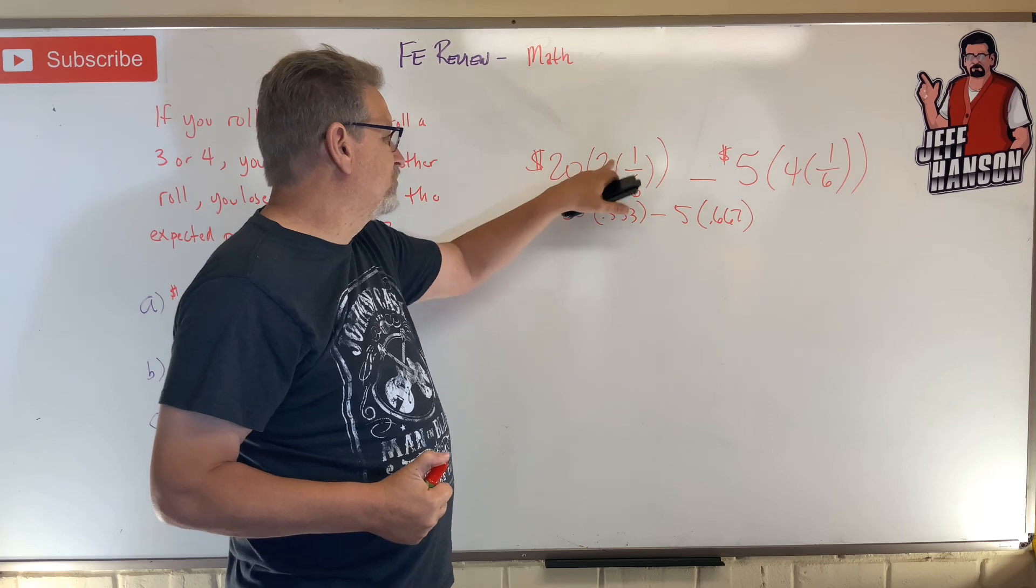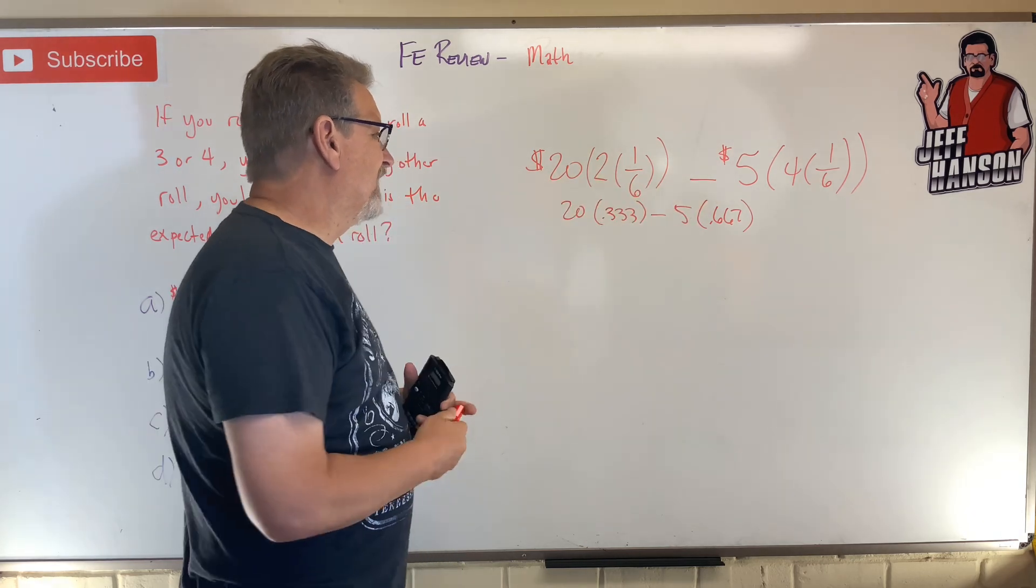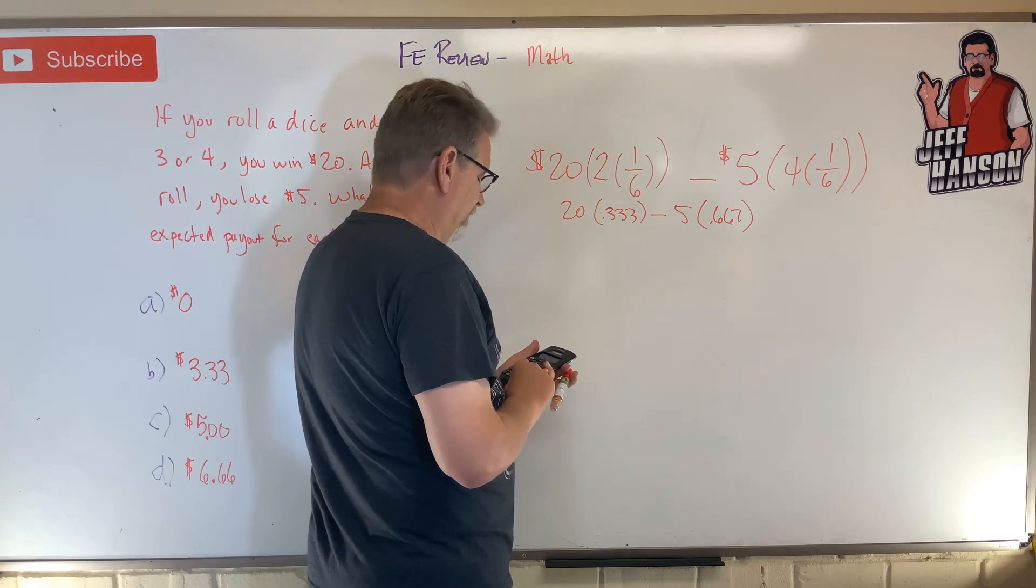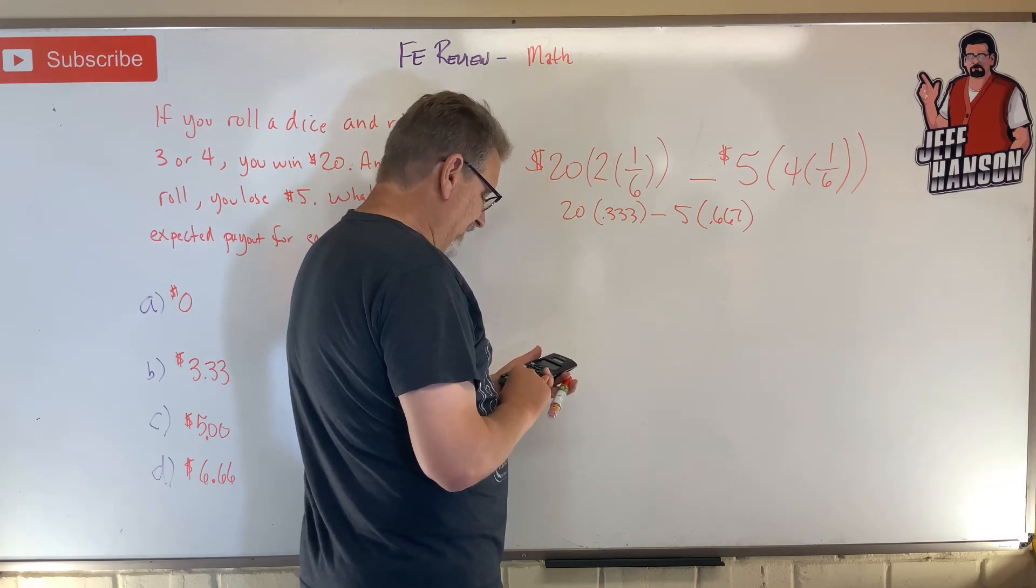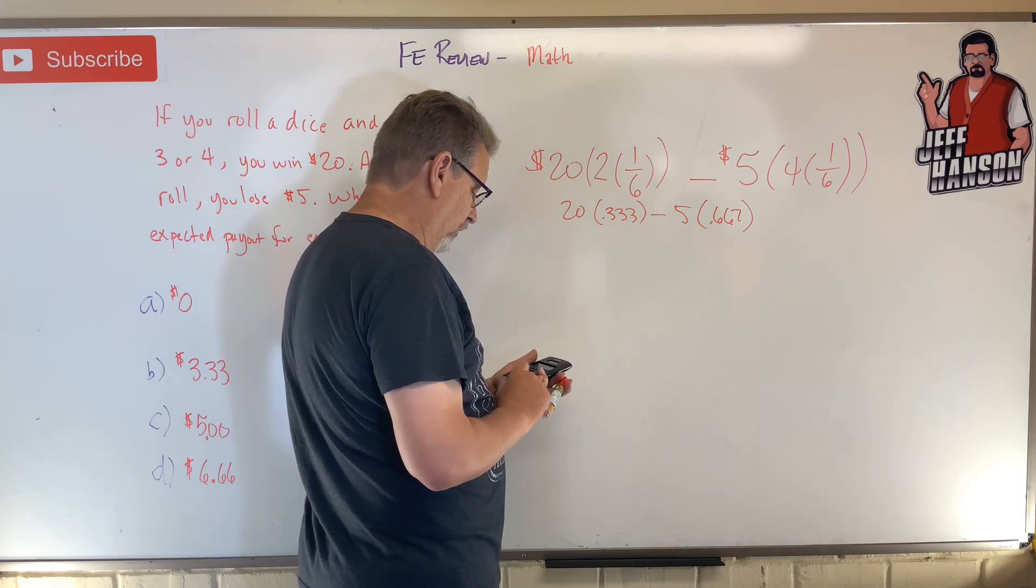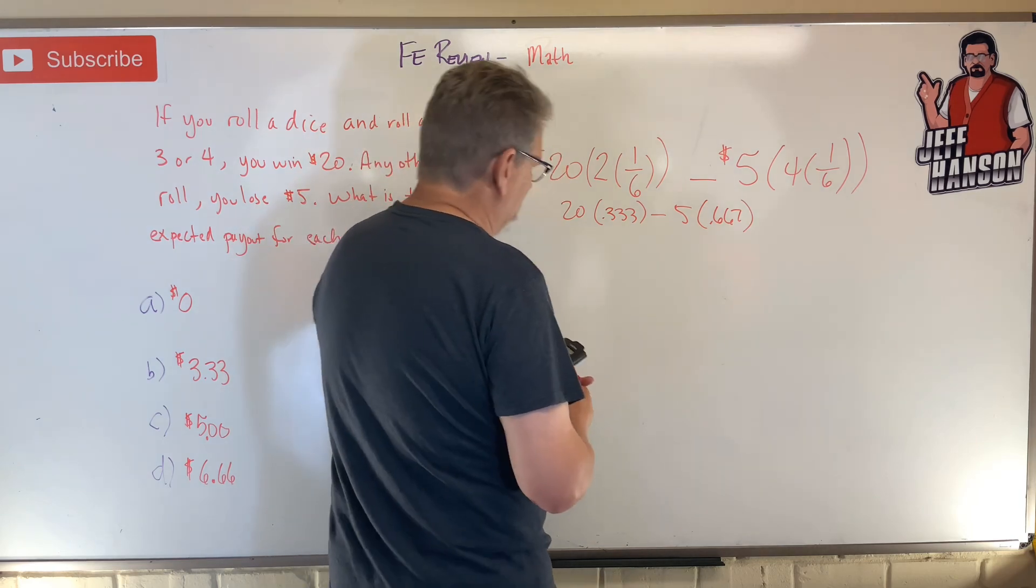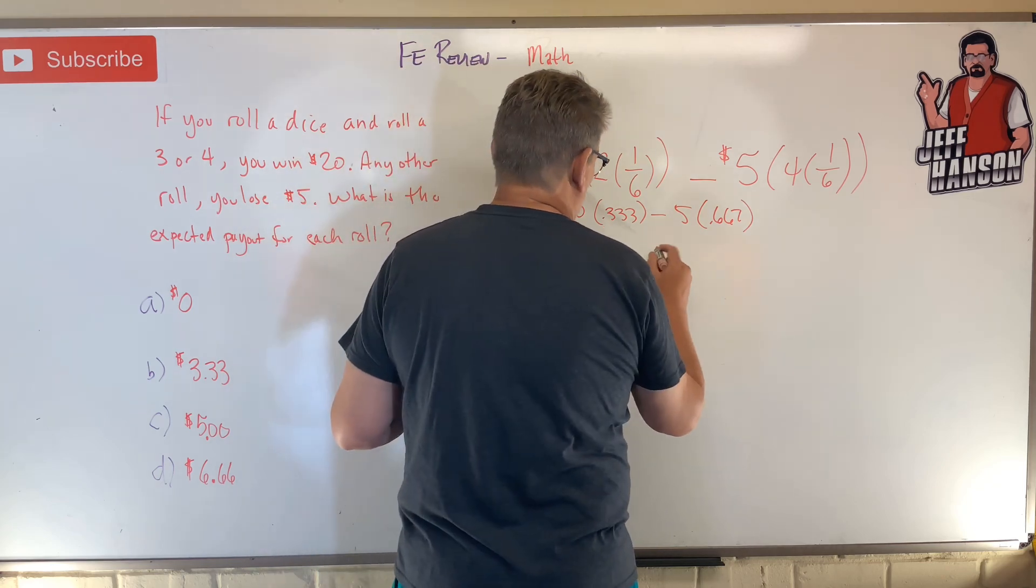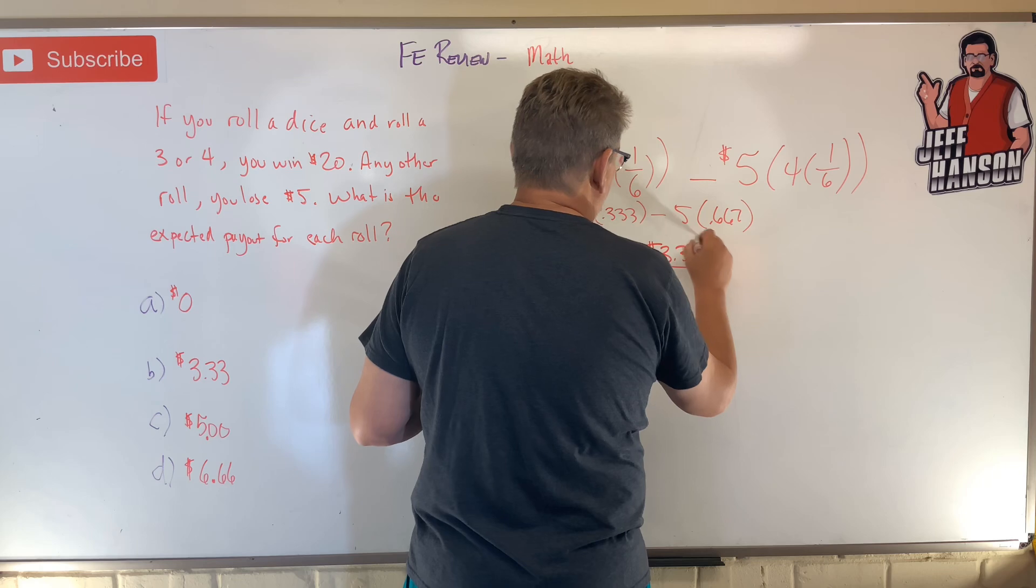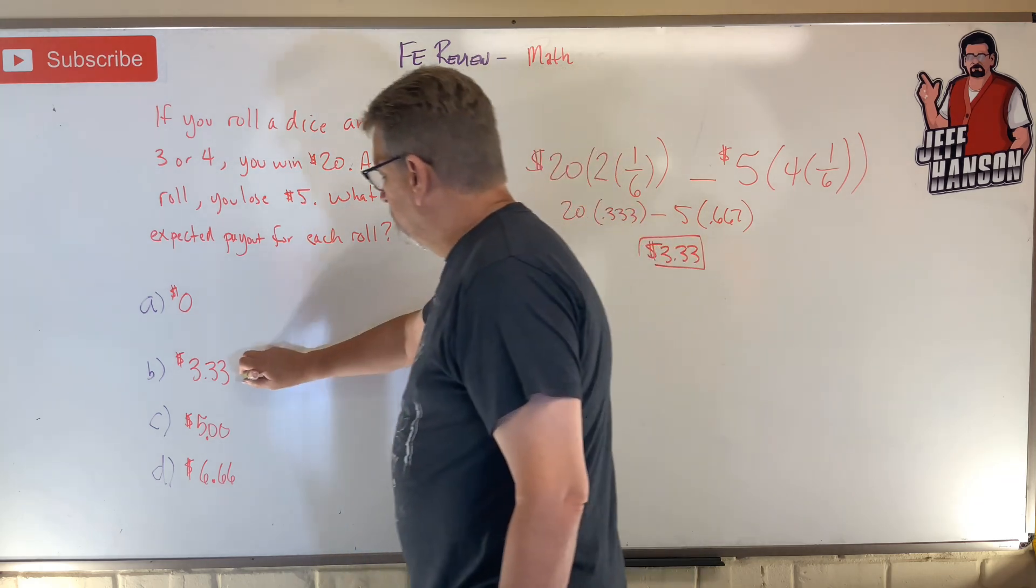I think the first way I said that makes more sense, right? 20 times two over six minus five times four over six. So how much is that? 20 times 0.333 minus 5 times 0.666 equals three dollars and 33 cents a roll. Okay, that's answer B.